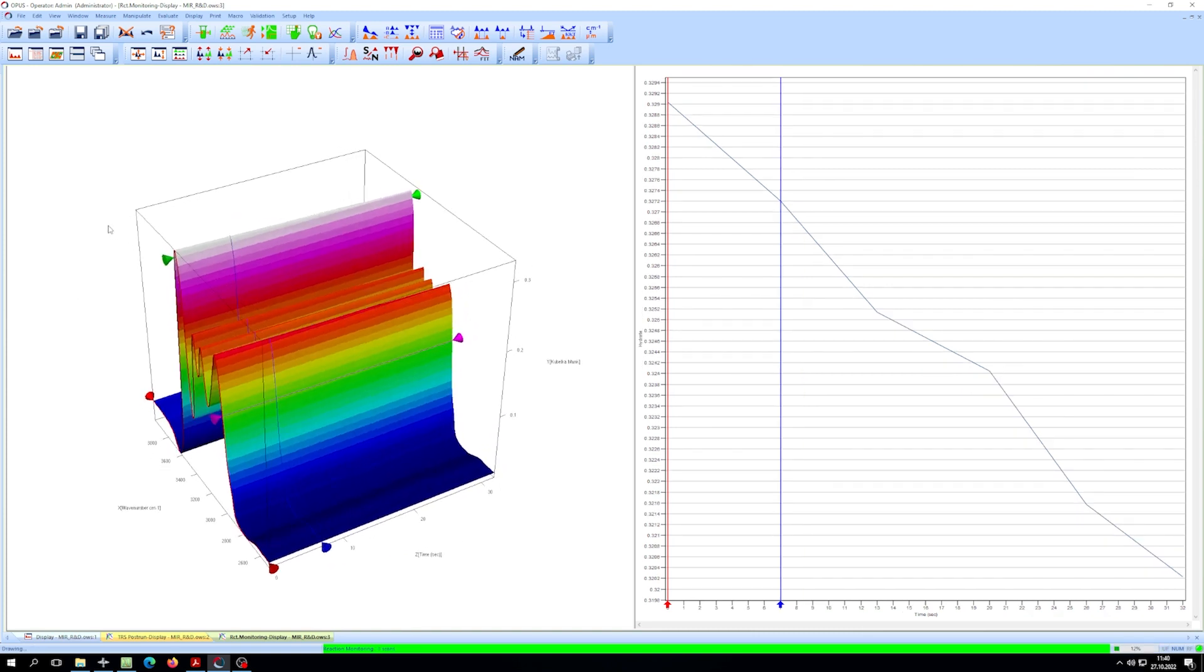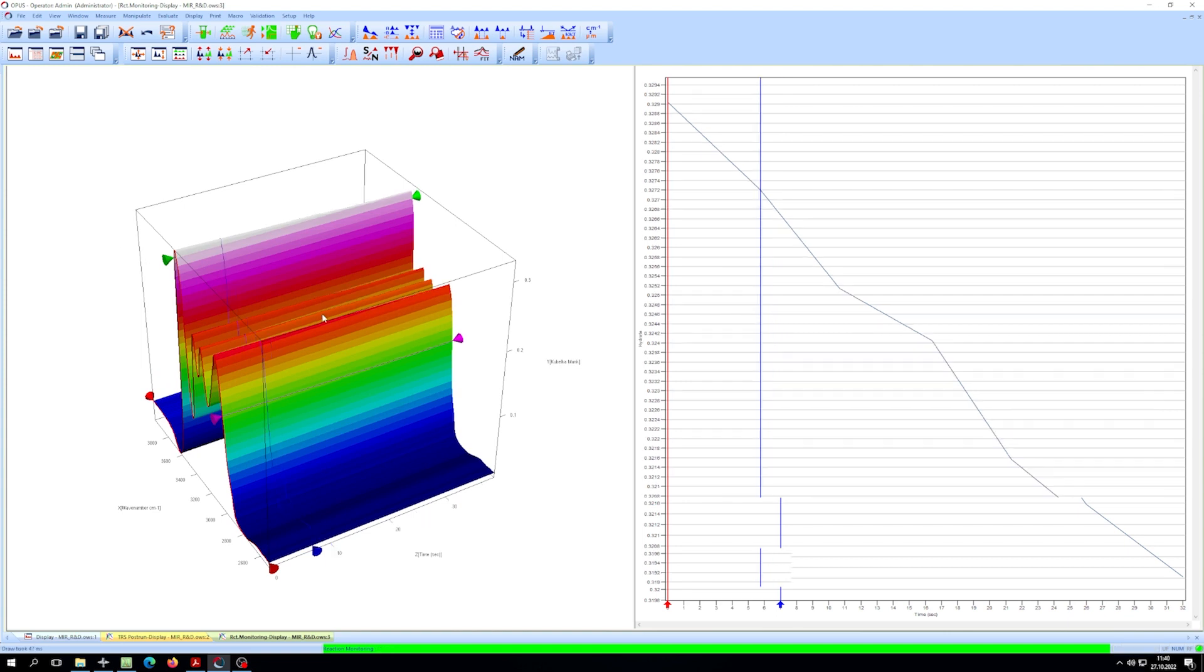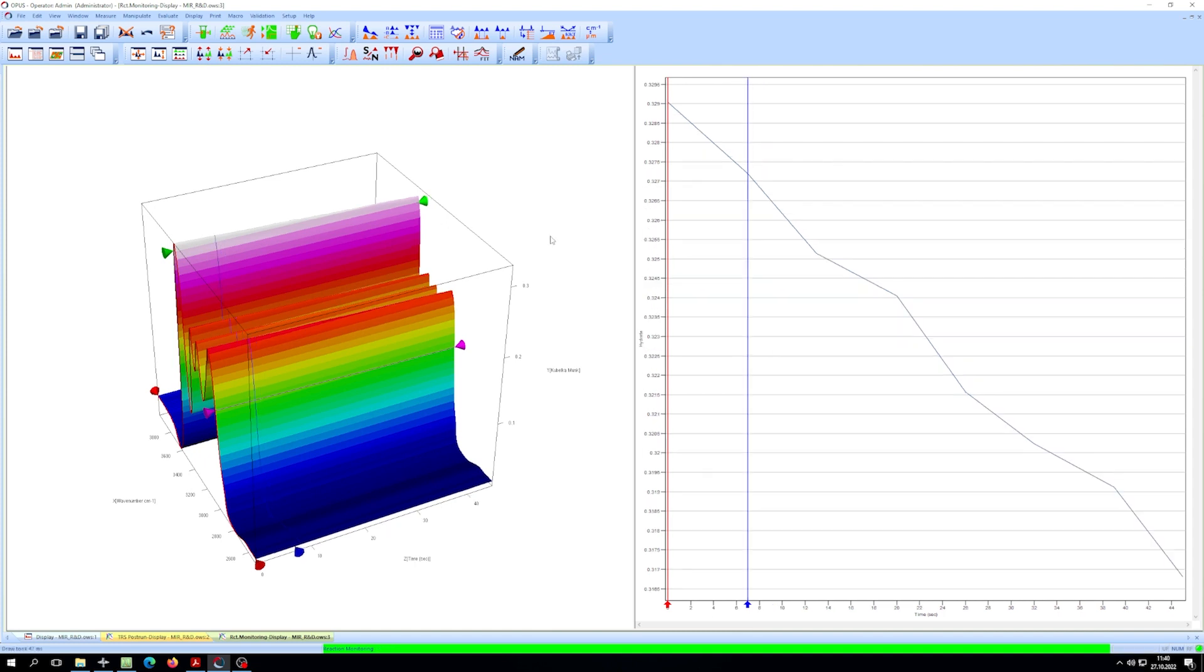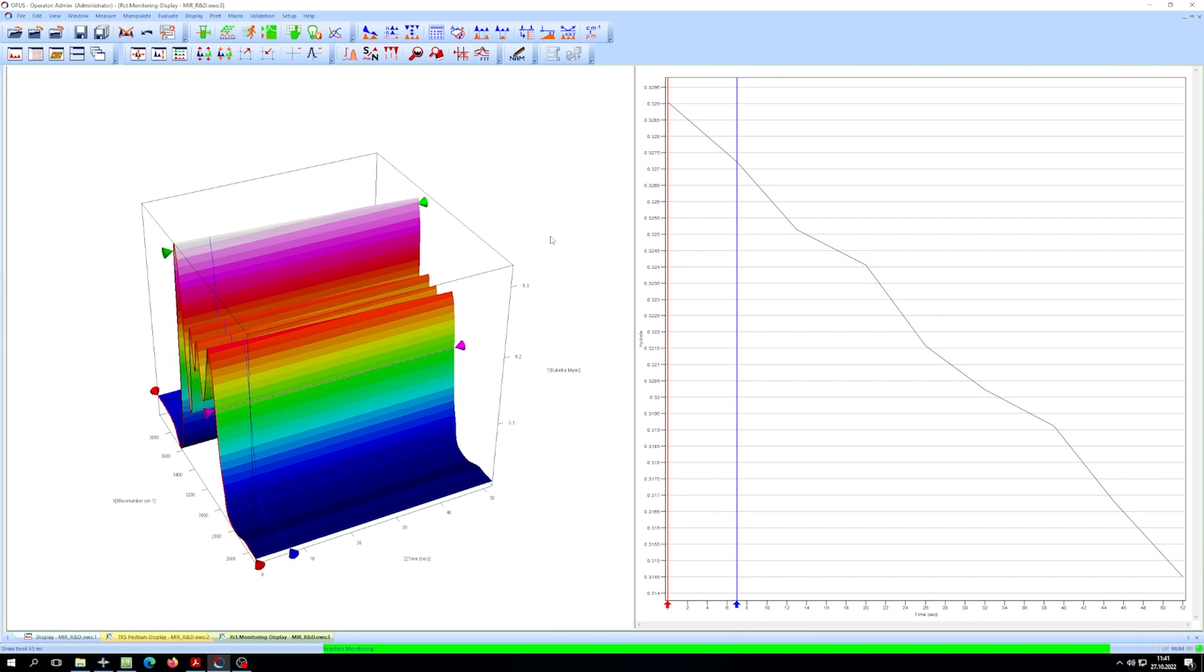For this, we have integrated the absorption signal of the OH bands over the wavenumber range shown on the left. The result of the integration is plotted against time, giving us a curve that tells us how far the outgassing process has progressed. The integration methods are configurable and can thus be adapted to various investigations.